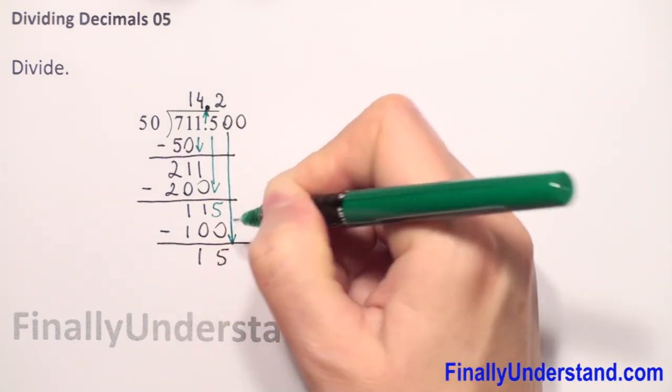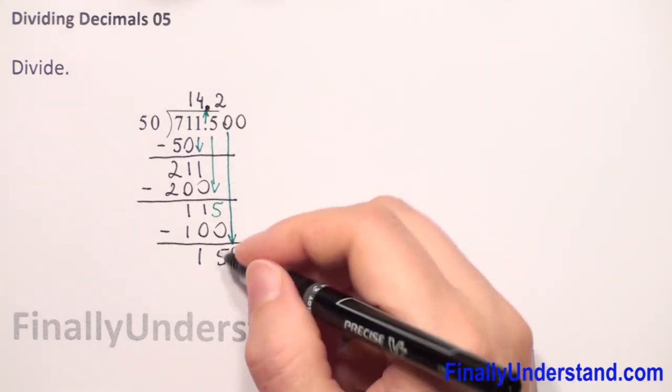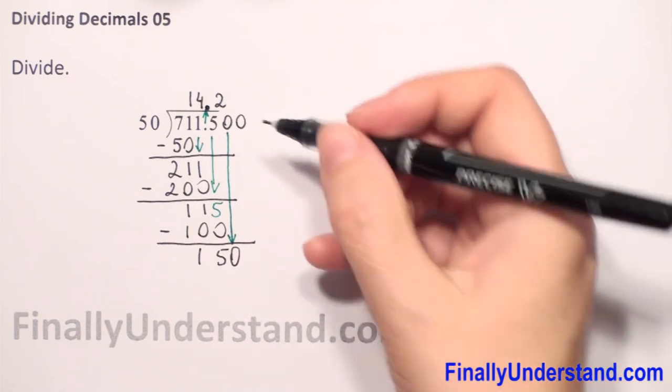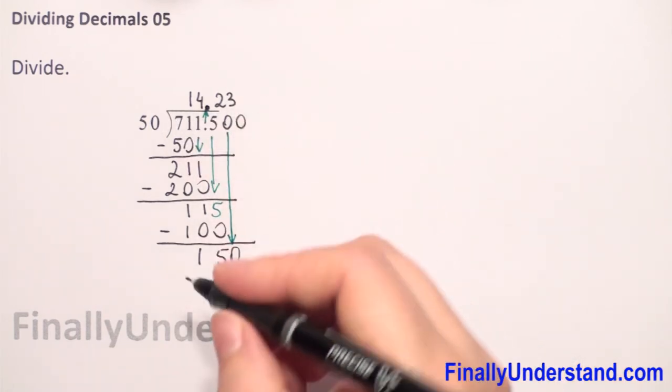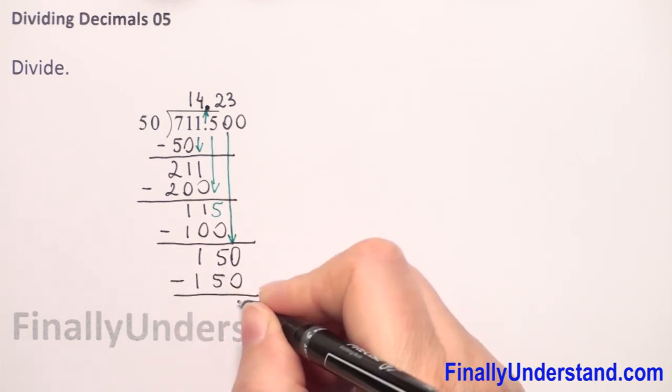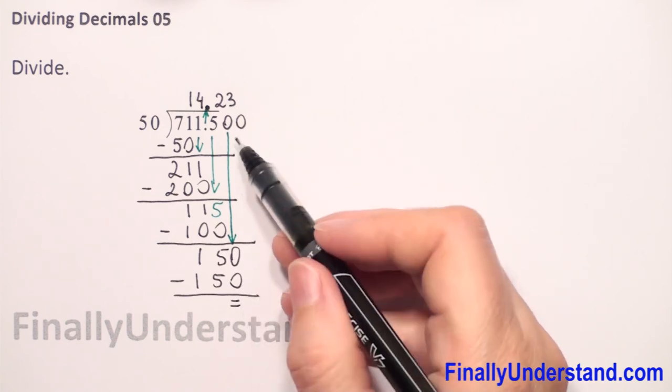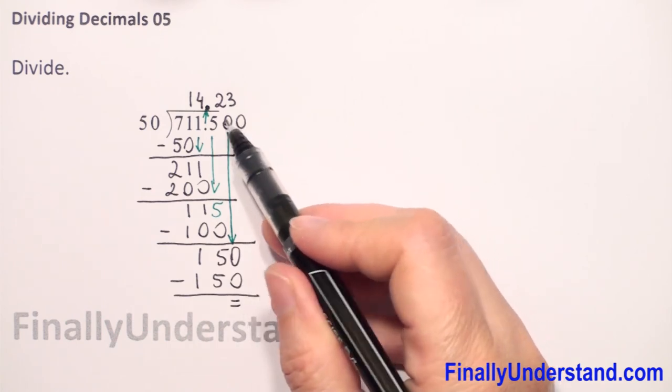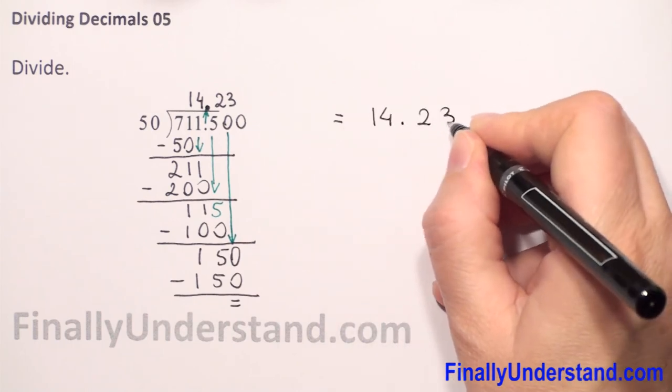And now we have to do multiplication: 3 times 50 is 150. Subtraction will be 0, so we finish the long division. We don't need this extra zero, and our solution will be 14.23.